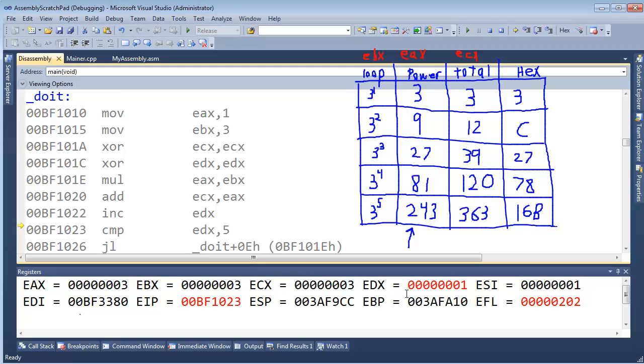Increment EDX, so EDX is now 1. Compare EDX to 5. Well, no, 1 is less than 5. Let's do this again.